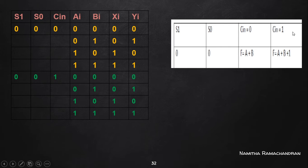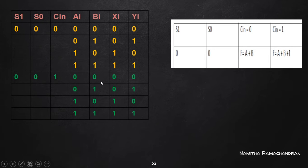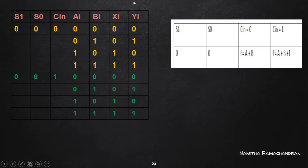For S1=0, S0=0 with C-in=1, we want to perform A plus B plus 1. The same connection applies: whatever value is provided to AI is transferred to XI, and whatever value is provided to BI is provided to YI, so that A and B are both available at the parallel adder output. This 1 becomes available from the C-in value.